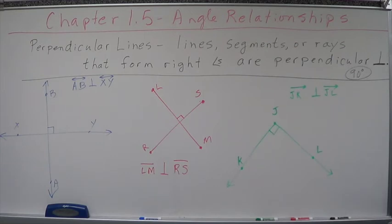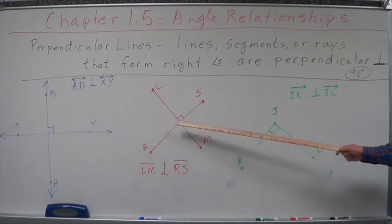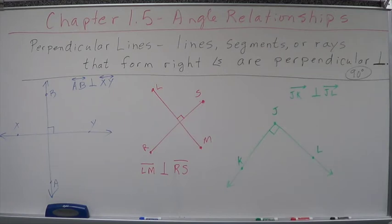Now, here are two line segments. Segment LM and segment RS are perpendicular. That's what this says right here. Example of it. Again, the box is how we would indicate that on that picture. Two rays. JK is perpendicular to JL. We have ray JK, ray JL. They're perpendicular to each other. That means they form a right angle.